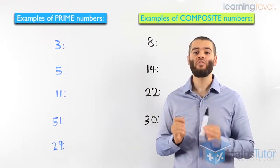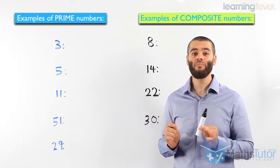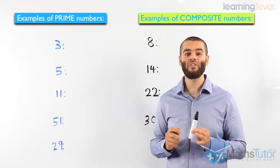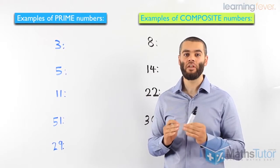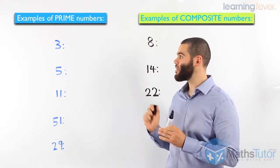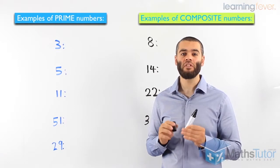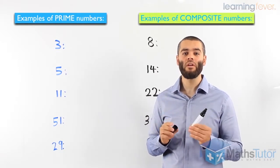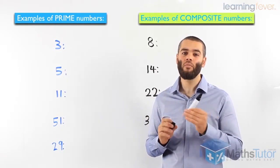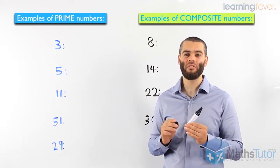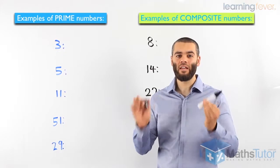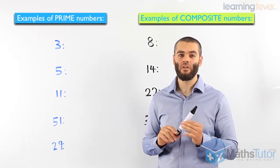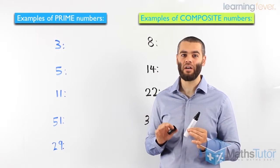Prime numbers. Let's define what they are first. Prime numbers are numbers that only have a factor of 1 and themselves. In other words, an example here of 3 is a prime number because it only can become a 3 when we times 1 by 3.